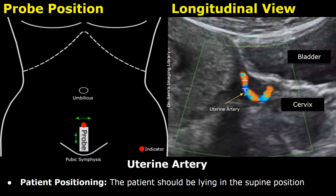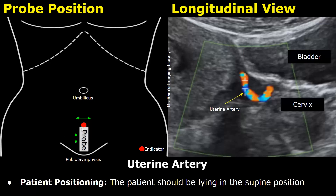Hello everyone, this is Dr. Sam, and this video is about uterine artery ultrasound probe positioning. On the left side is a schematic diagram showing probe placement. This is the umbilicus, down here is the pubic symphysis, so this is the pelvic region. This white box is the ultrasound probe and this red dot is the indicator for the orientation marker.